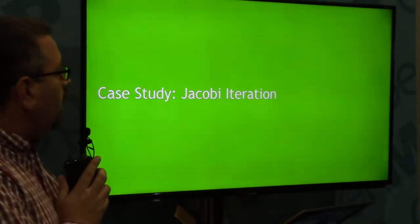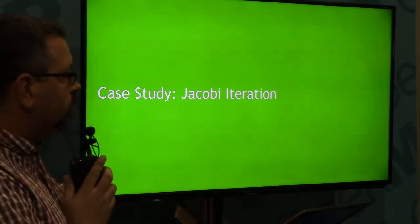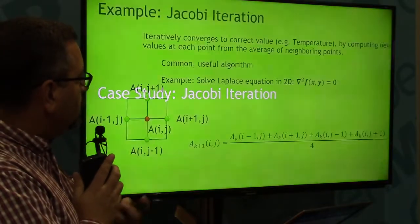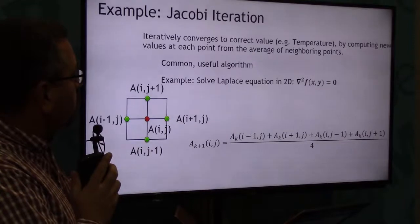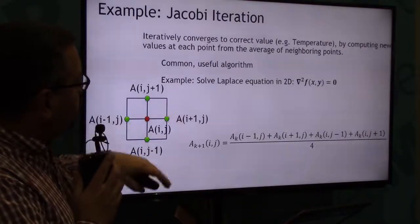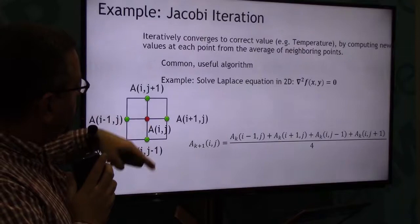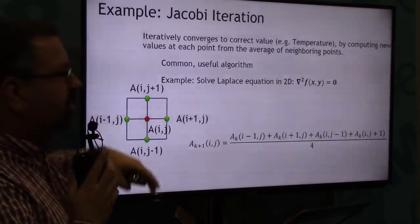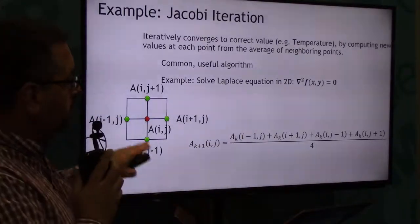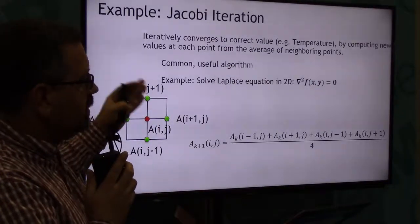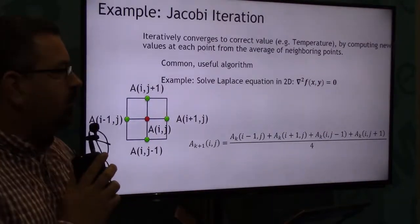I chose a fairly simple benchmark — it's a typical stencil benchmark that we've used for a lot of different codes. It does what we would call a Jacobi iteration. Basically, I'm solving for the Laplace heat equation. If I have this red point in the middle and I want to figure out what its temperature would be in a future iteration, I would just average my neighbors, and that would tell me what my temperature would become in the future.